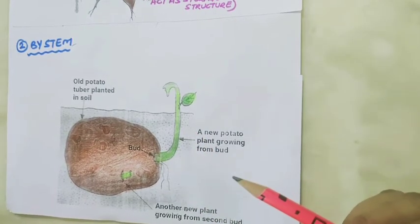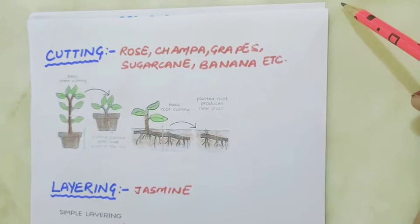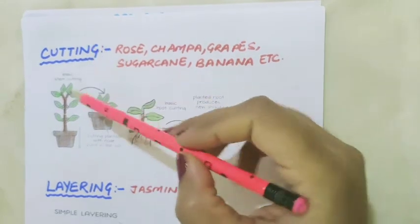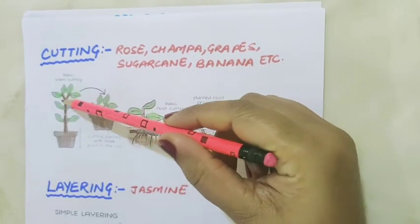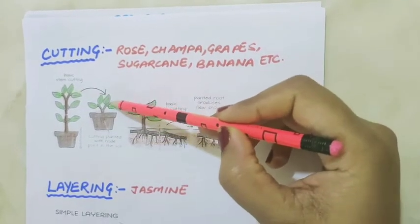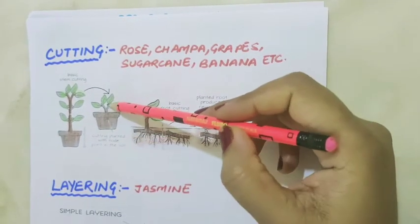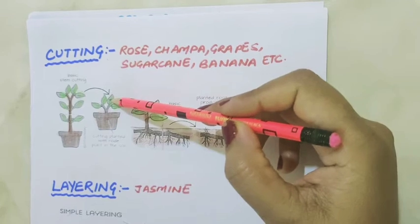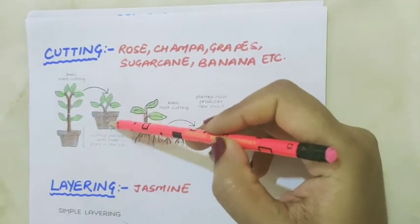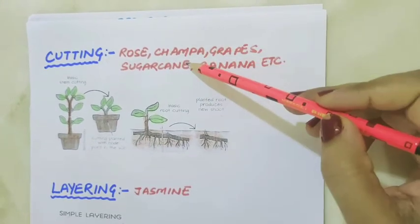The vegetative bud can give rise to new plants. New plants are obtained from the stem by the cutting method. A small part of the stem is removed by making a cut with a sharp knife — the stem cutting must have some buds on it. The lower end is buried in moist soil and the upper part with buds is kept above the soil. After a few days, this cutting develops roots. This method can be performed on rose, champa, grapes, sugar cane, banana, and cactus.